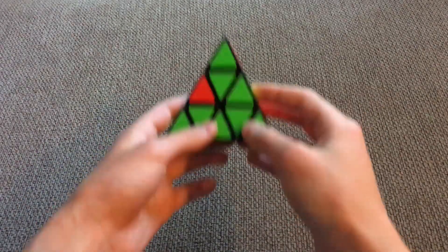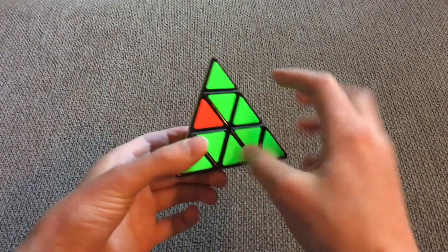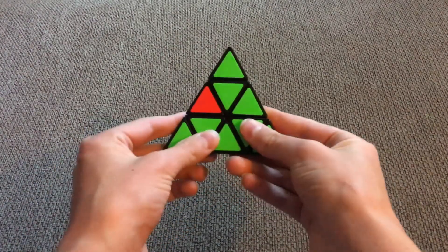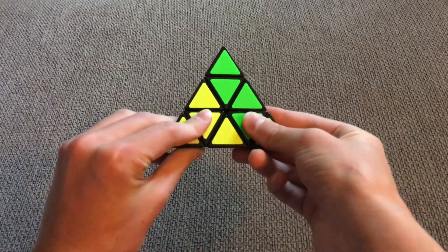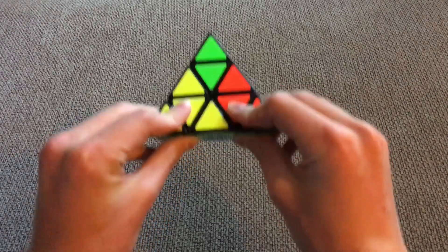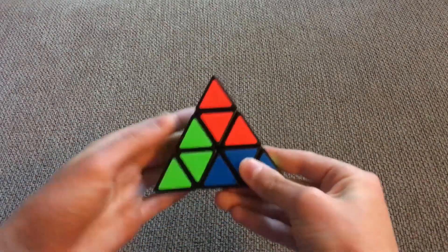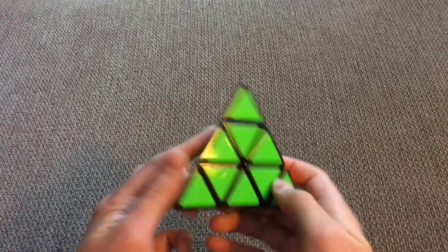Now, conversely, if that missing piece is on the left side, what you would do is you would bring down the left first, then the right, and then bring back up the left, and then the right. And then you place in the edge like normal, and your pyramids is solved.